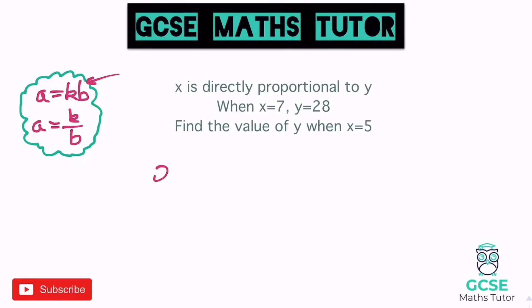For x and y, we write x equals k times y. We need to find what y is being multiplied by to make x. It says when x is 7, y is 28 — we plug those values in, leaving only k as the unknown, which means we can definitely solve it. It then says find the value of y when x is 5, but I'll find k first.